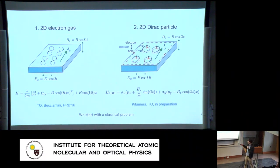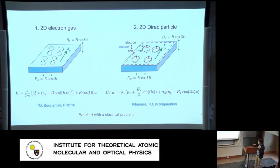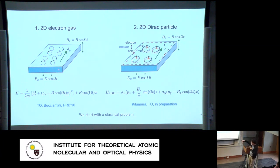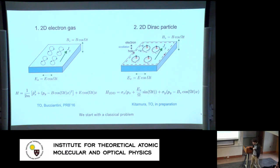Now let's move on to oscillating magnetic fields. I work on the two-dimensional electron gas using a simple Hamiltonian — the same Hamiltonian but with an oscillating magnetic field B cosine(omega t) inserted. Then I move to the two-dimensional Dirac electron with this oscillating magnetic field. Note that this gauge field also generates an additional electric field in the y direction proportional to x times the time derivative, which breaks translational invariance in the x direction — so it's not just a homogeneous system.